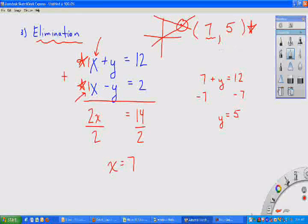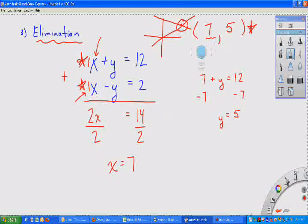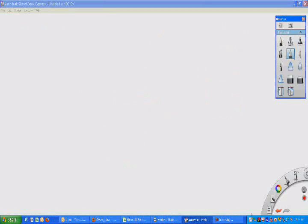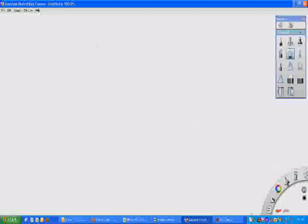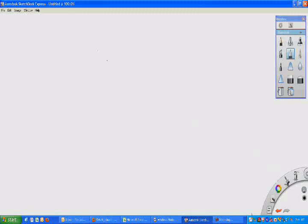So if we were to graph those, turn them into y equals mx plus b, they're going to cross at 7 comma 5. One of them is going to look like this, the other is going to look something like this, or whatever they happen to look like, but they're going to cross at this point, 7 comma 5.